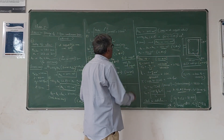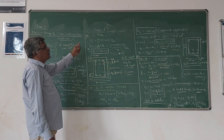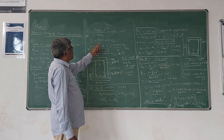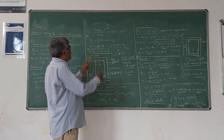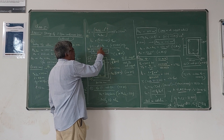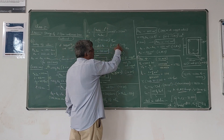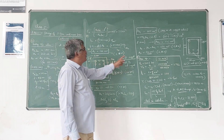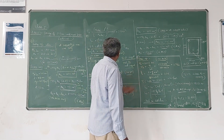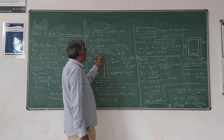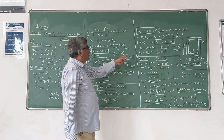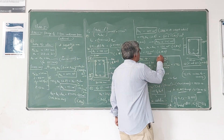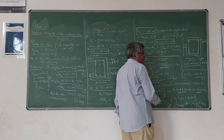Similarly, the strain ε'sc at the compression steel level is calculated using the same formula, and FST is the same. Equating the force in the compression steel to the force in the additional tension steel AST2, ASC for the mid-span comes out to be 550 mm² (compared to 788 mm² at the support). We can provide 2 bars of 20 mm diameter for this compression steel.